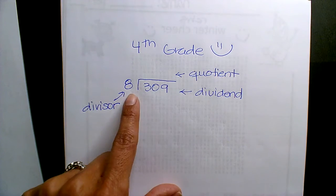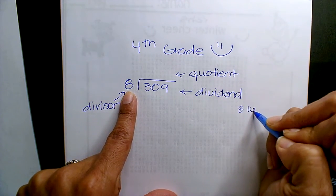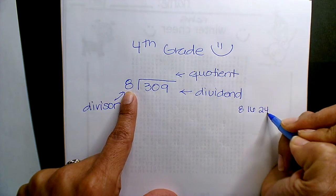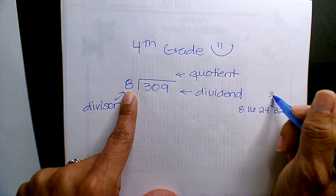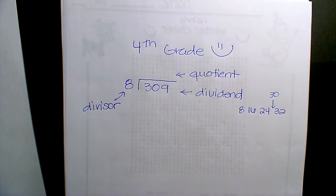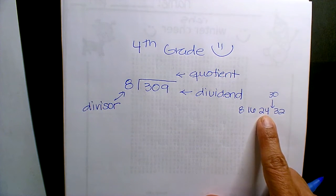So if I think of the multiples of 8, 8 times 1 is 8, 8 times 2 is 16, 8 times 3 is 24, 8 times 4 is 32. Okay, 30 lands right here. You cannot surpass the number, right? So you're not going to pick 8 times 4, it's 8 times 3.